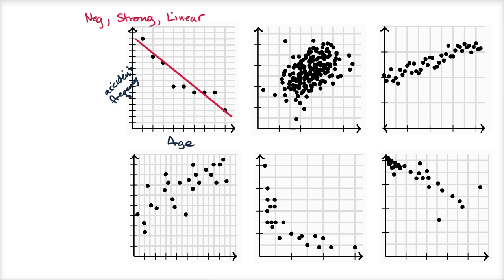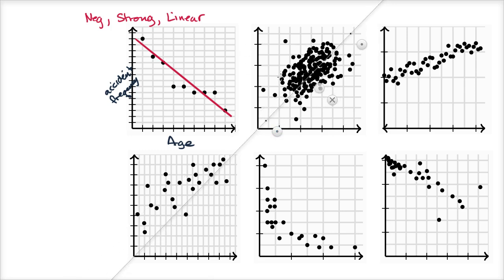Now let's look at this one. I'll get my ruler tool out again, and it looks like I can try to put a line — generally speaking, as one variable increases, the other variable increases as well. Something like this goes through the data and approximates the direction. This looks positive: as one variable increases, the other variable increases roughly. So this is a positive relationship, but this is weak — a lot of the data is well off the line. But I'd still say this is linear, as we increase one, the other increases at roughly the same rate, although the data points are all over the place.